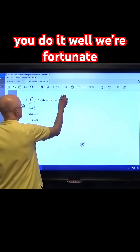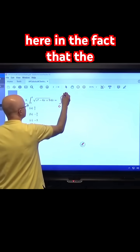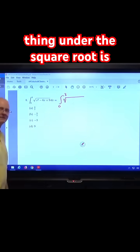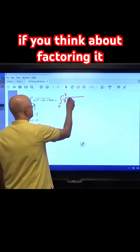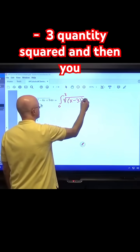Well, we're fortunate here in the fact that the thing under the square root is a perfect square. Think about it. If you think about factoring it, it is x minus 3 quantity squared.